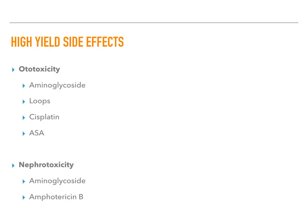Ototoxic drugs include aminoglycosides, loop diuretics like furosemide, cisplatin, and ASA. Nephrotoxic drugs include aminoglycosides and amphotericin B. Aminoglycosides are both ototoxic and nephrotoxic — remember 'NO': N for nephrotoxic, O for ototoxic. For amphotericin B, remember 'amphoterrible' — it's nephrotoxic and also causes phlebitis, sometimes recalled as 'amphlebitis.'